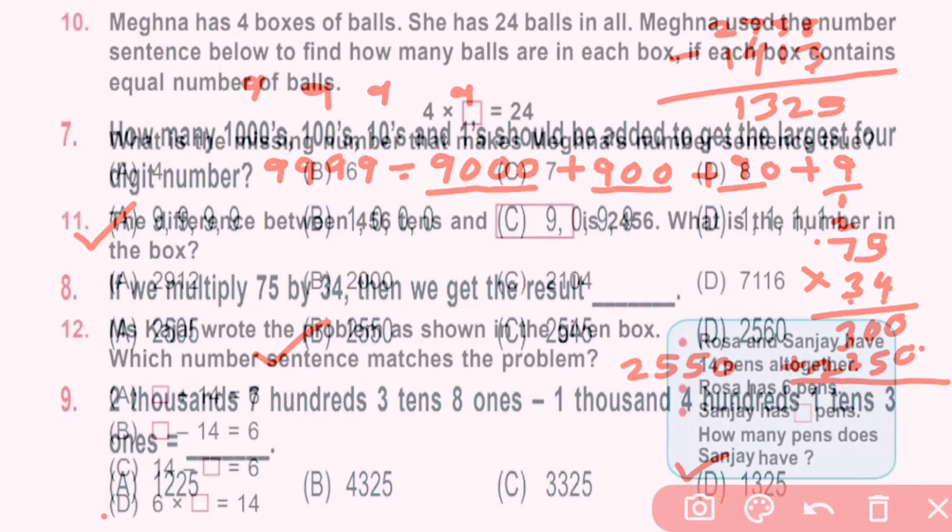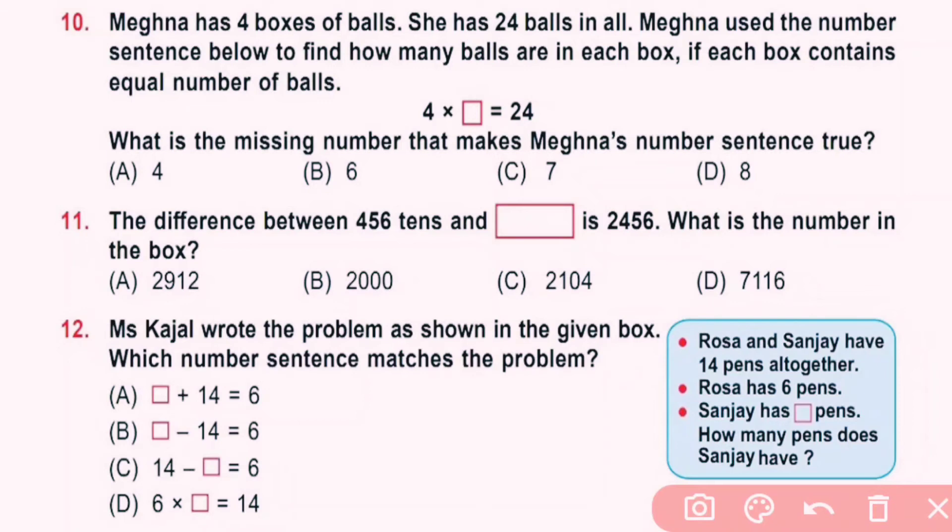Question number 10: Meghna has 4 boxes of balls. She has 24 balls in all. Meghna used the number sentence below to find how many balls are in each box if each box contained equal number of balls. 4 into dash equals 24. What is the missing number that makes Meghna's number sentence true? Here 4 into what gives 24? 4 sixes are 24, means 4 into 6 equals 24. So here B is correct answer.